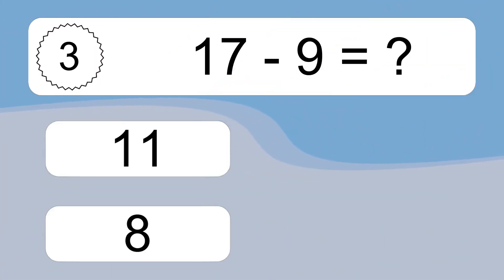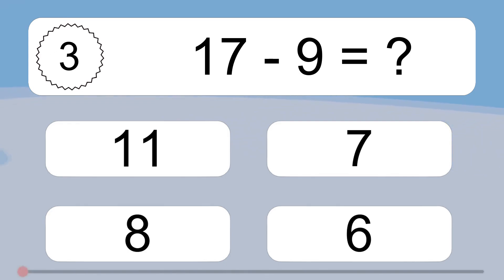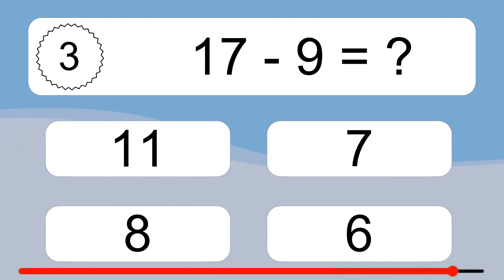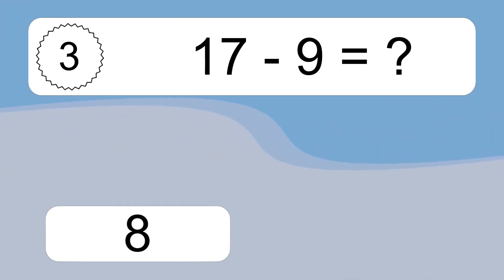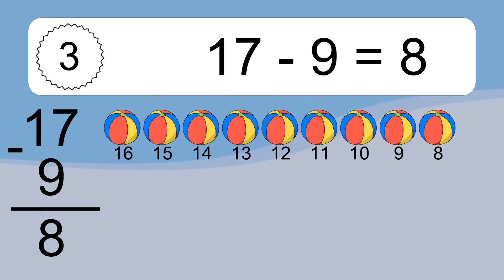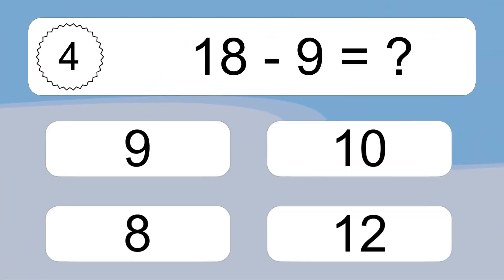17 minus 9 equals what? 17 minus 9 equals 8. Let's count it: 16, 15, 14, 13, 12, 11, 10, 9, 8.